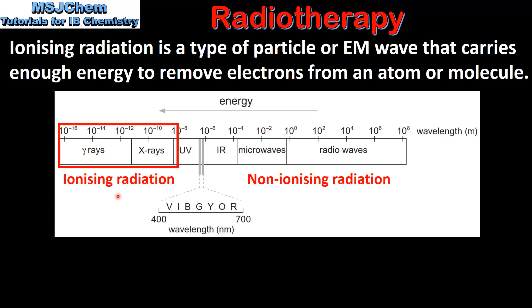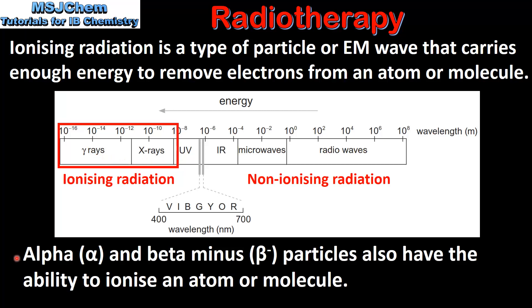Here we can see examples of ionizing radiation. This includes the upper portion of UV radiation, X-rays and gamma rays. Alpha and beta minus particles also have the ability to ionize an atom or molecule.